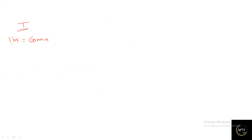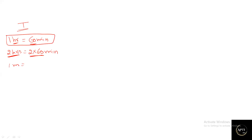For time conversions: 1 hour = 60 minutes. To convert hours to minutes, multiply by 60. To convert minutes to hours, divide by 60. For example, 2 hours = 2 × 60 = 120 minutes. One minute = 1/60 hours. This is simple — hours to minutes: multiply by 60; minutes to hours: divide by 60. I hope you're all clear with time conversion of hours to minutes.